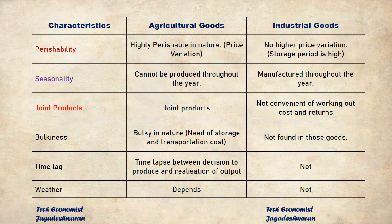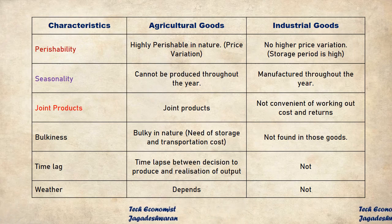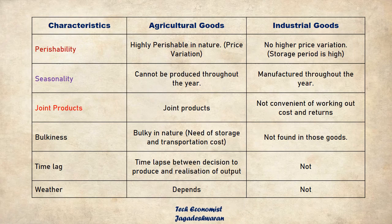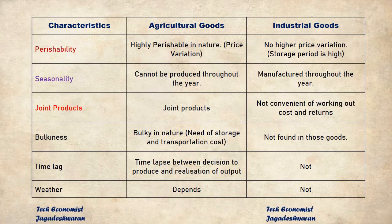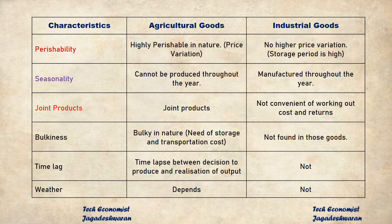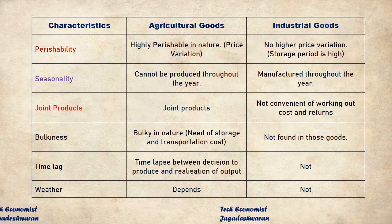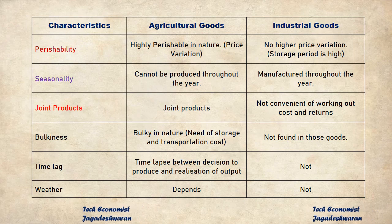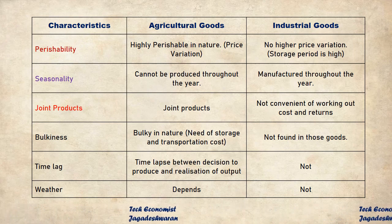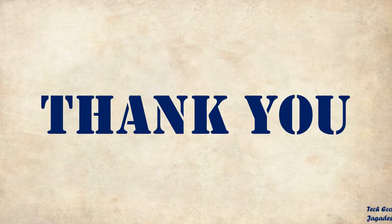Fifth, time lag — the time between production decisions and the realization of output, that is harvest time, is significant in agriculture, unlike in industry where if you have inputs you can manufacture immediately. Sixth, weather conditions — weather is a main factor in agriculture. A factory will run regardless, but in agriculture the weather conditions must be permissible for producing commodities.